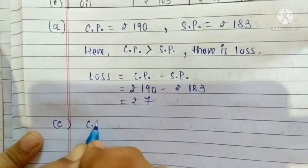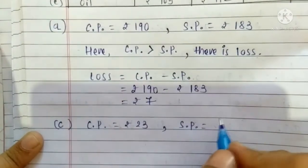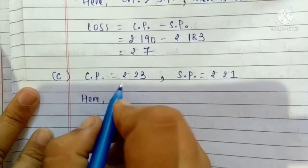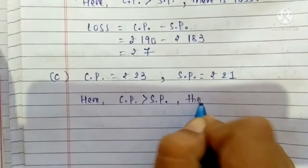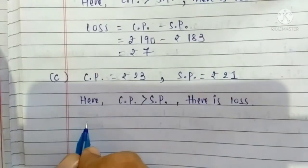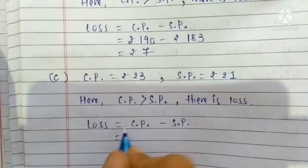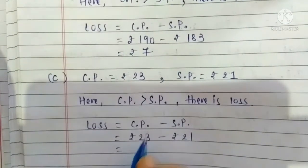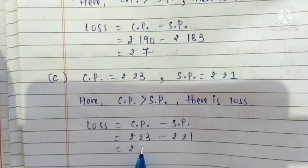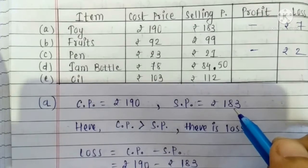C. Item है paan. Paan ke liye Cost Price है Rs. 23 and Selling Price है Rs. 21. Here, we observe that cost price is greater than selling price, so there is a loss. Loss = Cost Price − Selling Price = 23 − 21 = Rs. 2. So, pen pay 2 rupees ka loss hua hai. Remaining sums you will do in your homework.